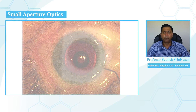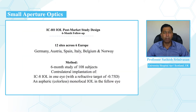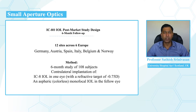This post-operative slit lamp photograph shows the nicely centered IC8 intraocular lens over the patient's visual axis. I want to share the multi-center European post-market study with six-month follow-up data. This trial was carried out across 12 sites in Europe, recruiting 108 subjects where the IC8 was implanted monocularly with a refractive target of minus 0.75 diopters, and the fellow eye received a standard aspheric monofocal intraocular lens.